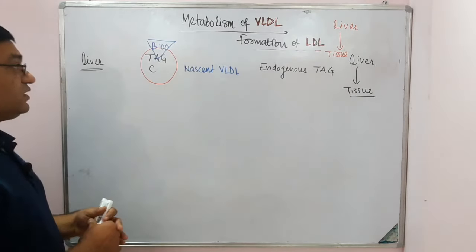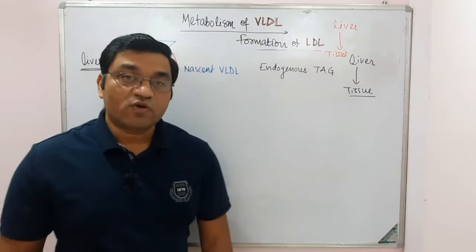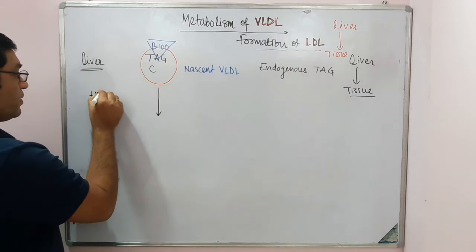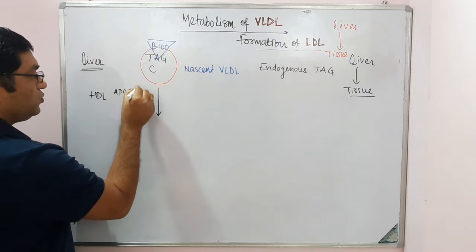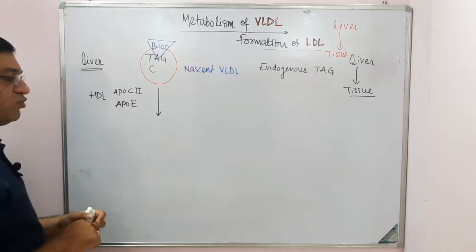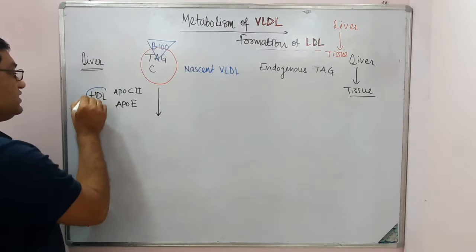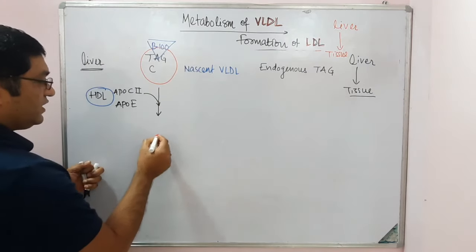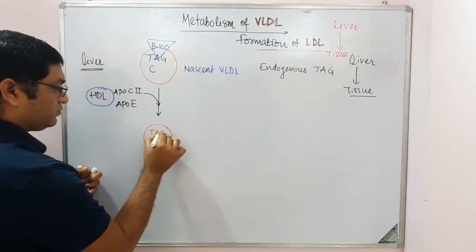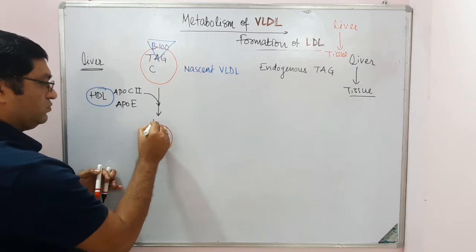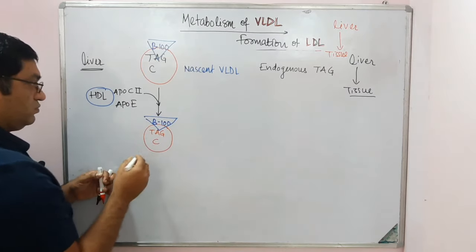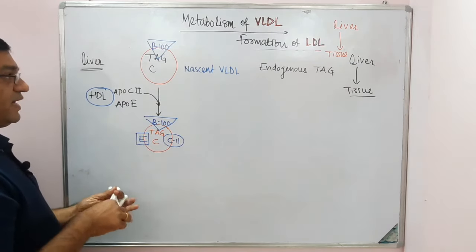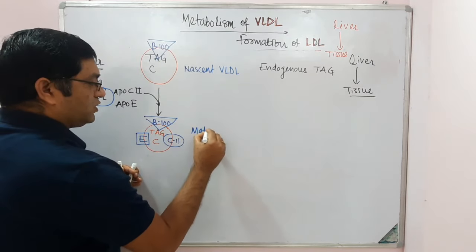The second step in VLDL metabolism is maturation. Maturation of VLDL occurs by acquiring ApoC2 and ApoE — that is, Apolipoprotein C2 and ApoE — from the HDL. It acquires these two apolipoproteins from HDL and is converted into mature VLDL.